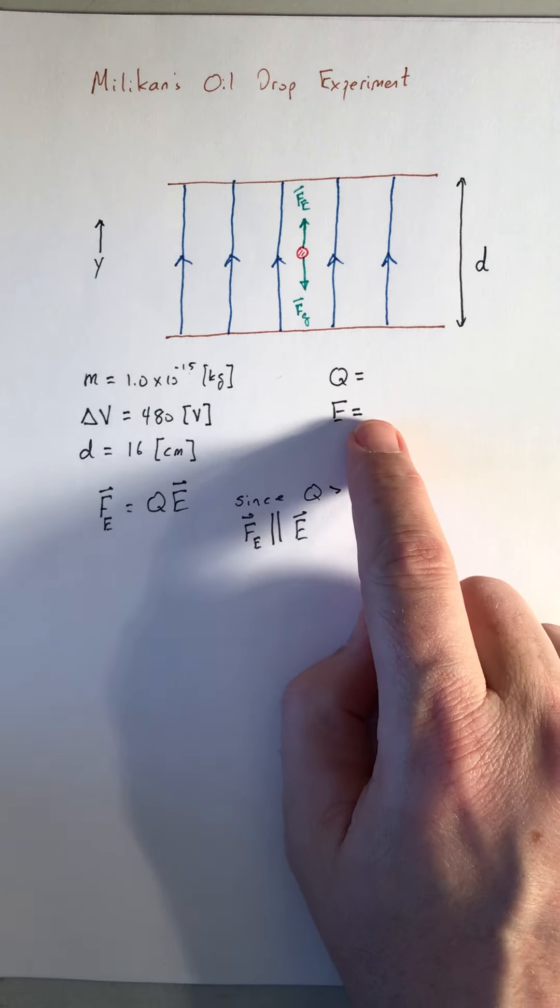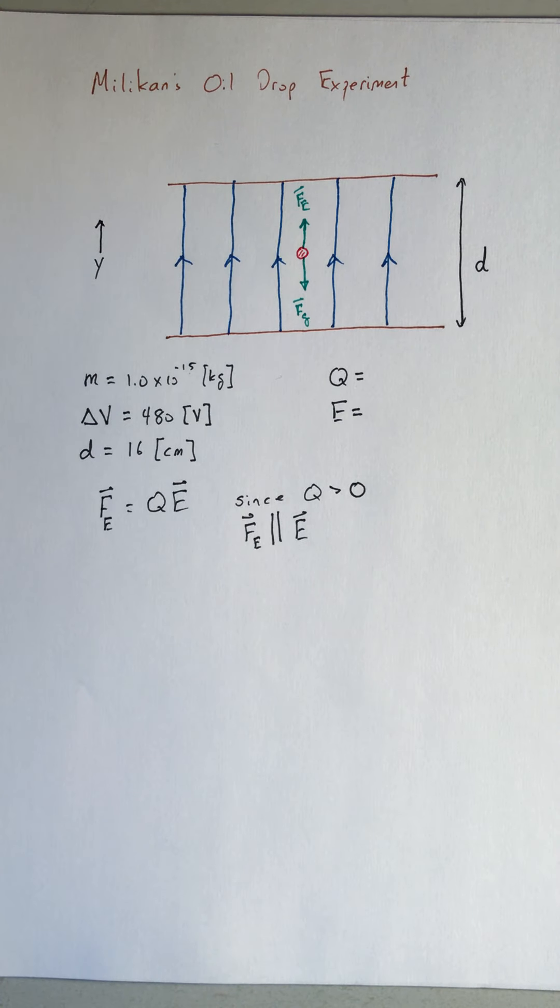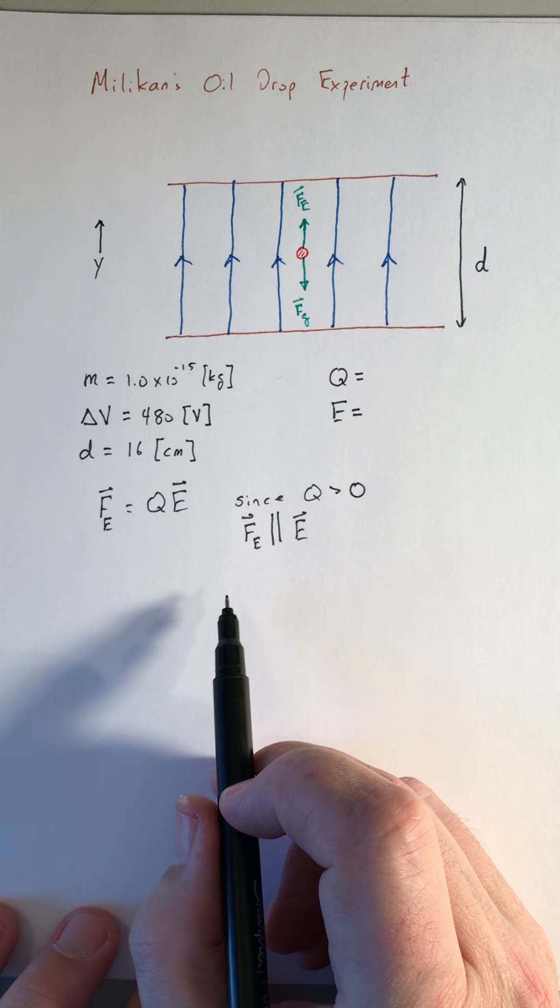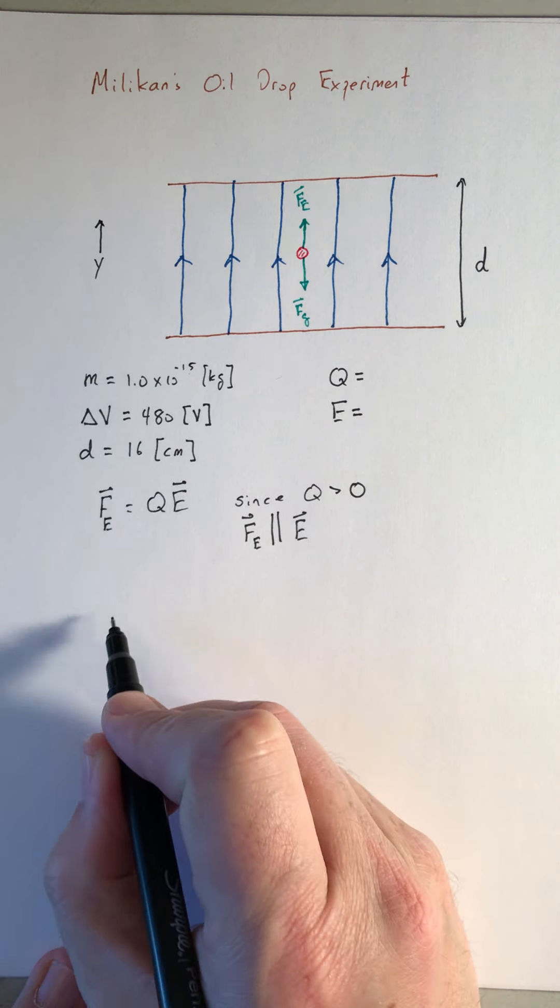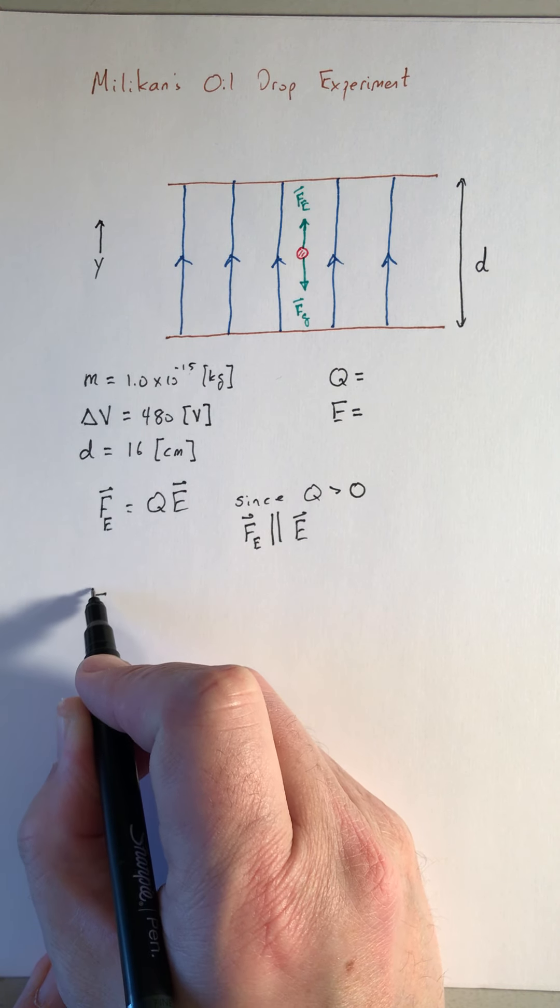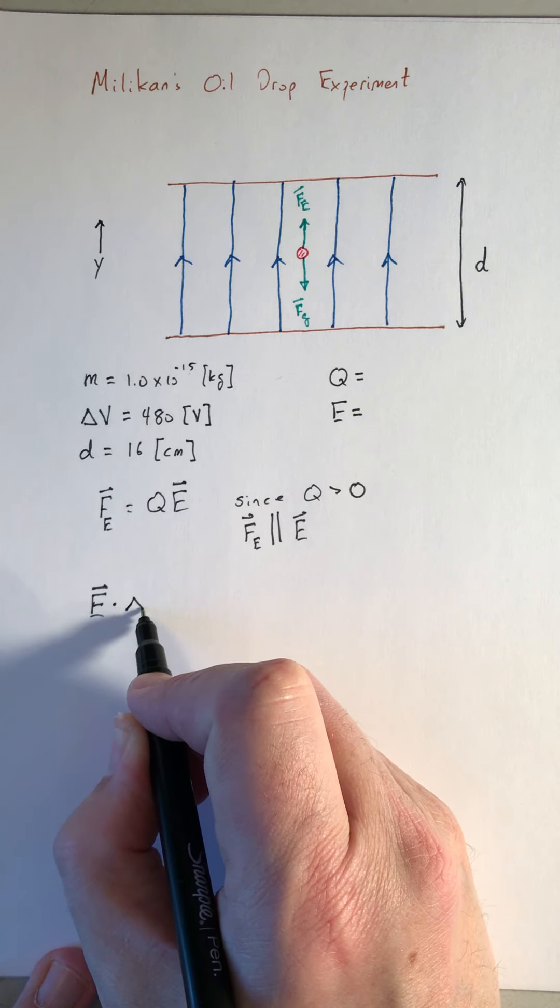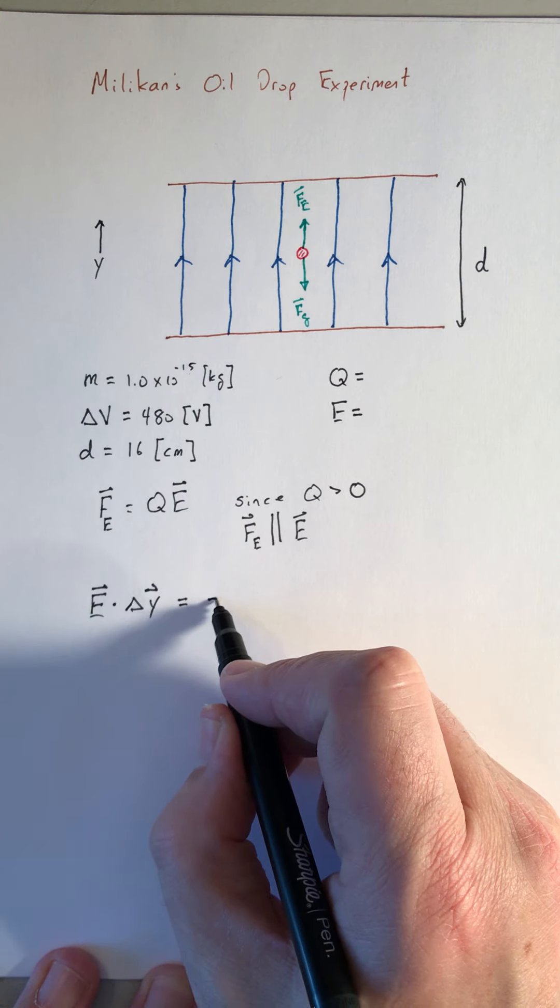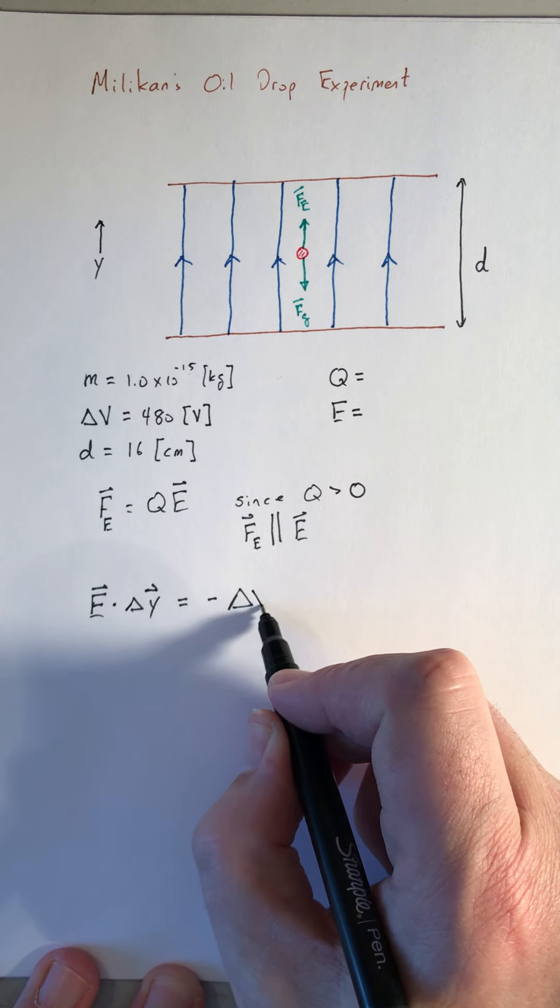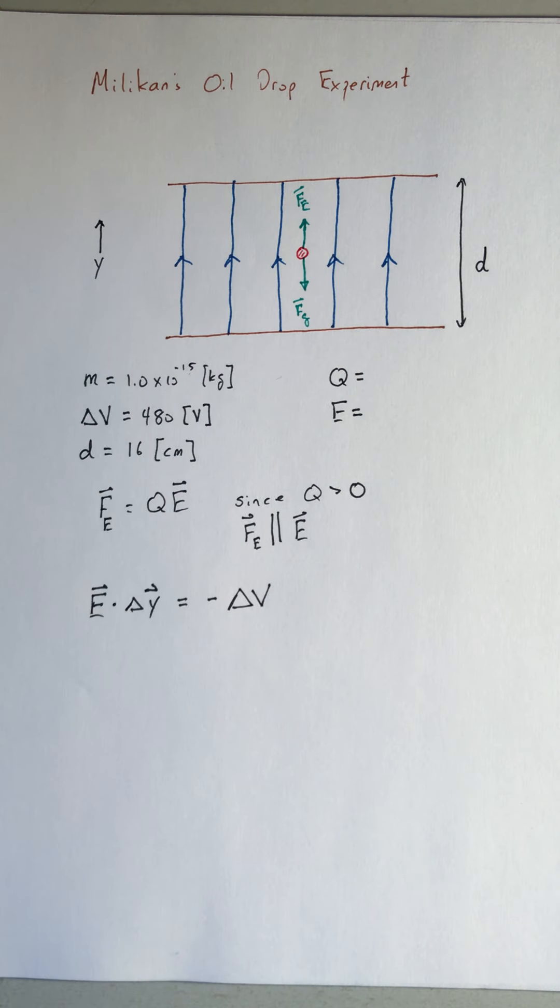All right, we want to calculate what the electric field strength is. We're going to use the definition of electric potential in terms of electric field. So the dot product of the electric field with a displacement vector is equal to minus the change in potential. And that's a consequence of Coulomb's law and the Coulomb force being a conservative force. So it can be written in terms of a change of potential energy.